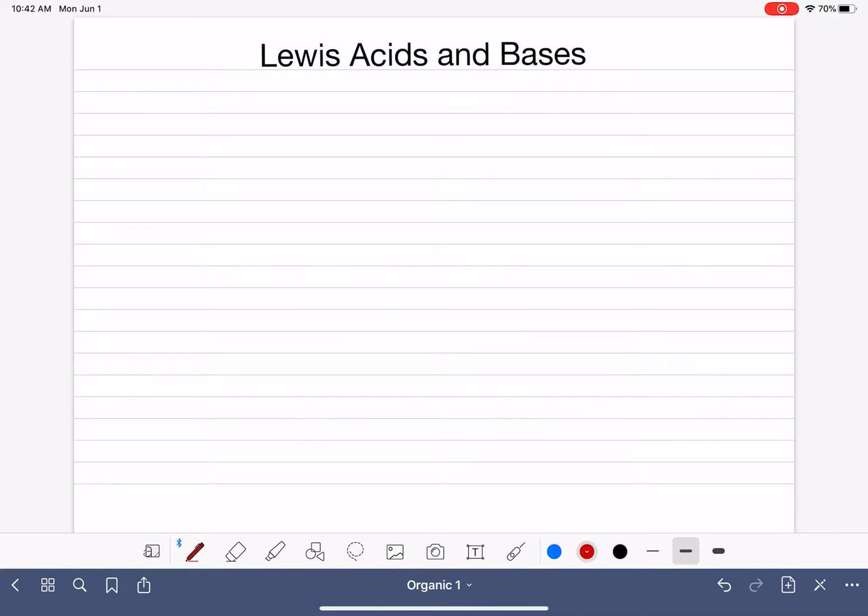The most common way to define an acid or a base is to use the Bronsted-Lowry method, which involves looking at the transfer of protons or H-plus ions from one molecule to another.